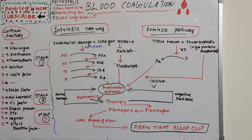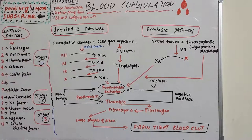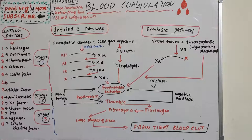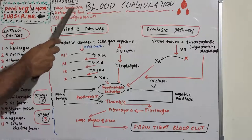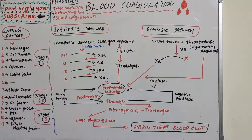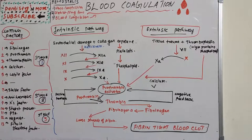Hemostasis is defined as the arrest or stoppage of bleeding. When a blood vessel is injured, the injury initiates a series of reactions which results in hemostasis, occurring in three stages. The first stage is vasoconstriction, where constriction of vessels happens. The second stage is platelet plug formation, involving accumulation of platelets and temporary plug formation.